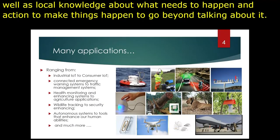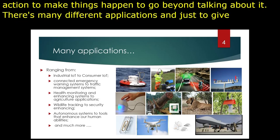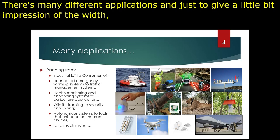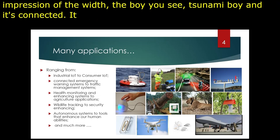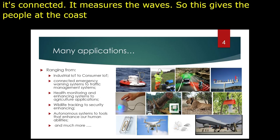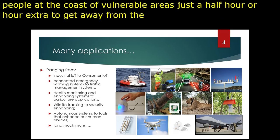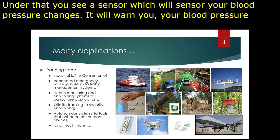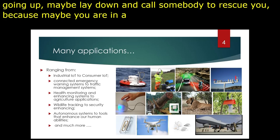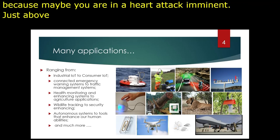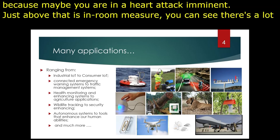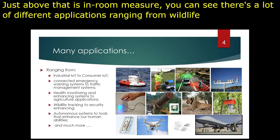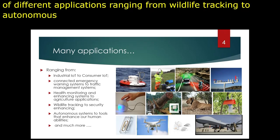There are many different applications — just to give a little impression of the width: the buoy you see is a tsunami buoy, and it's connected and measures the waves, giving people at the coasts of vulnerable areas just a half hour extra to get away when necessary. There's also a small sensor that can be part of a body, which will sense your blood pressure changes and warn you if your blood pressure is going up — maybe to call somebody, because a heart attack may be imminent. There's also an in-room carbon monoxide measurer, and applications ranging from wildlife tracking to autonomous systems that manage networks of roads around busy cities.